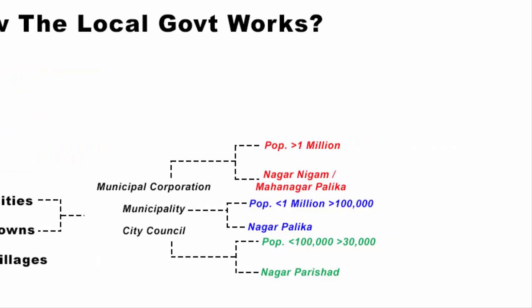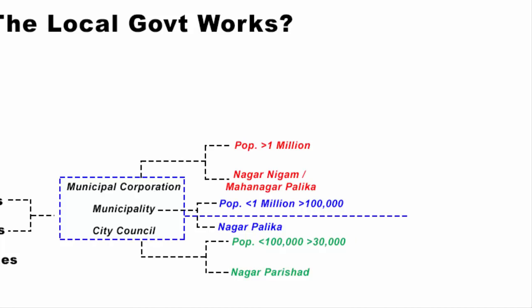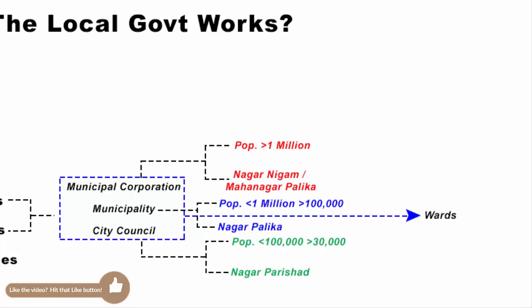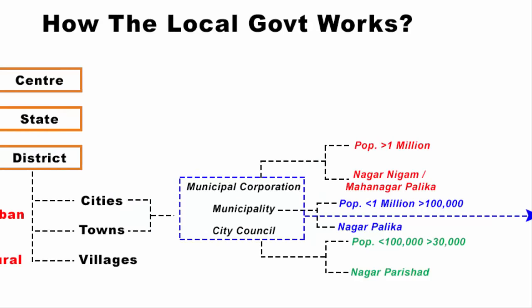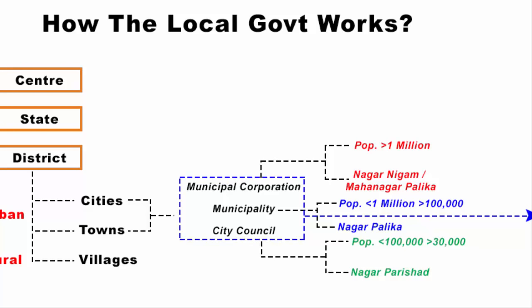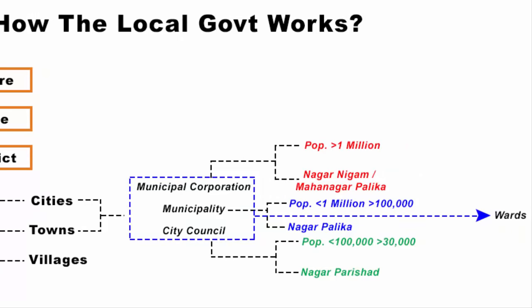All three forms of local governments are further subdivided into administrative units called wards. One member is elected from each ward through a direct election, and together all these individual wards form a ward committee. So basically, a municipal corporation, municipality, or city council is made up of a ward committee. These are urban local political units with elected representatives.